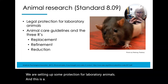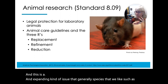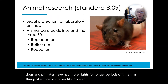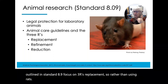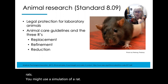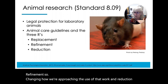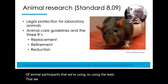This is an expanding issue. Generally, species that we like, such as dogs and primates, have had more rights for longer periods of time than species like mice and rats. The animal care guidelines as outlined in Standard 8.09 focus on three R's: Replacement — so rather than using rats, you might use a simulation of a rat; Refinement — changing how we're approaching the use of that work; and Reduction — reducing the number of animal participants, using the least that we can for the kind of research we're doing.